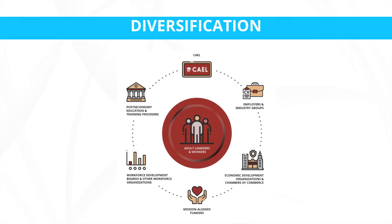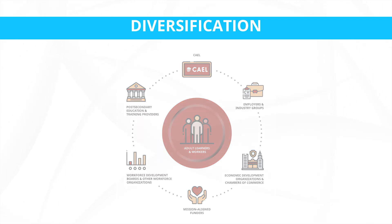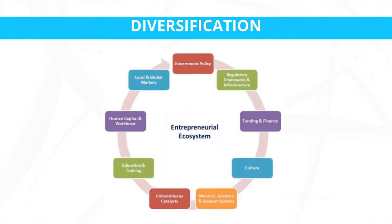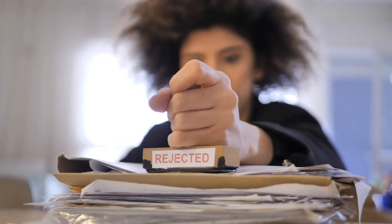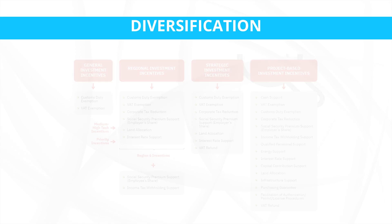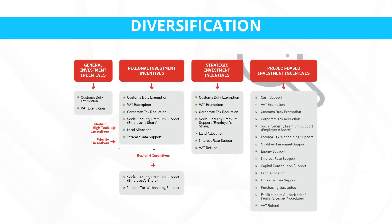Third, education and workforce development: provide training and education to develop a skilled workforce that can support the growth of new industries. Fourth, promotion of entrepreneurship: encourage entrepreneurship and create an environment that fosters innovation and business startups. Fifth, removal of barriers: streamline regulations and reduce bureaucratic obstacles to facilitate the growth of new industries. Sixth, investment incentives: offer incentives and support to attract domestic and foreign investment in target sectors.